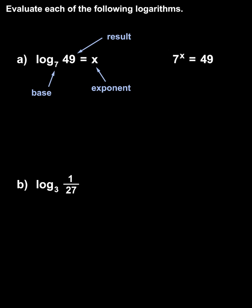Next, we solve for x. Notice that 7 and 49 have a like base of 7, so we rewrite 49 as 7 squared. And we have 7 to the x equals 7 squared, so x must equal 2.